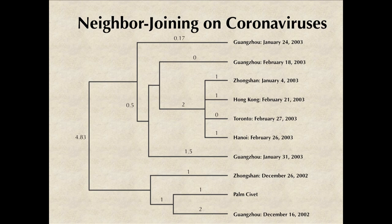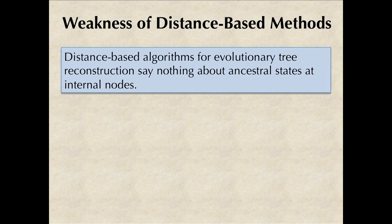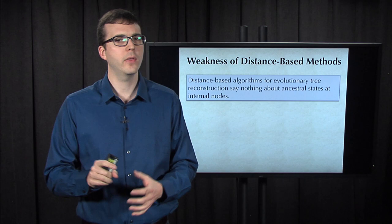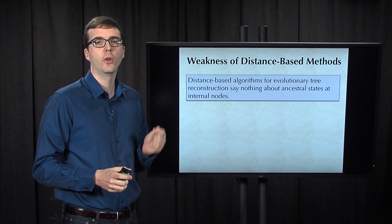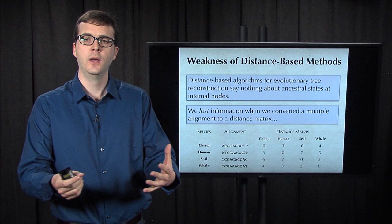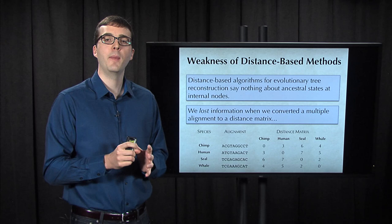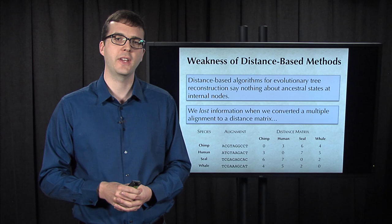It probably seems like we've come a long way in our discussion of distance-based approaches for constructing evolutionary trees. But we should point out that these algorithms don't allow us to infer anything about the ancestors that are assigned to the internal nodes of the tree. The reason why we can't infer anything is because when we passed from a multiple alignment to a distance matrix, we inherently lost information about the sequences themselves. In order to say anything about ancestral states, we're going to need an approach that can analyze the alignment directly.